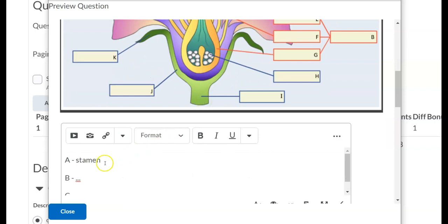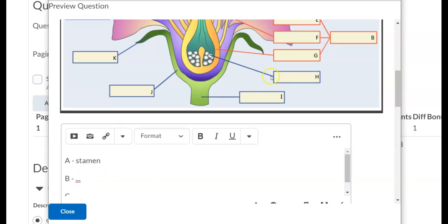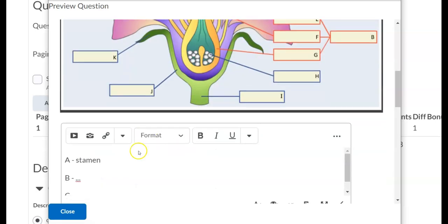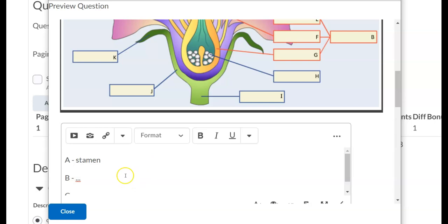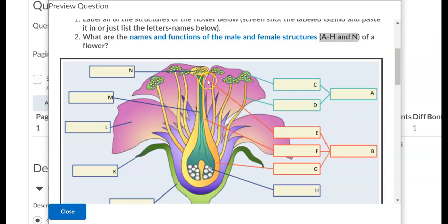So the next thing you have to do is, once you get the parts labeled in the gizmo, you have to tell me what they're called. So you can actually just write a list, like A is called the stamen, B whatever it's called. C I think was the anther. You just write in what you think it's called, and then you're going to write about the male and female structures.